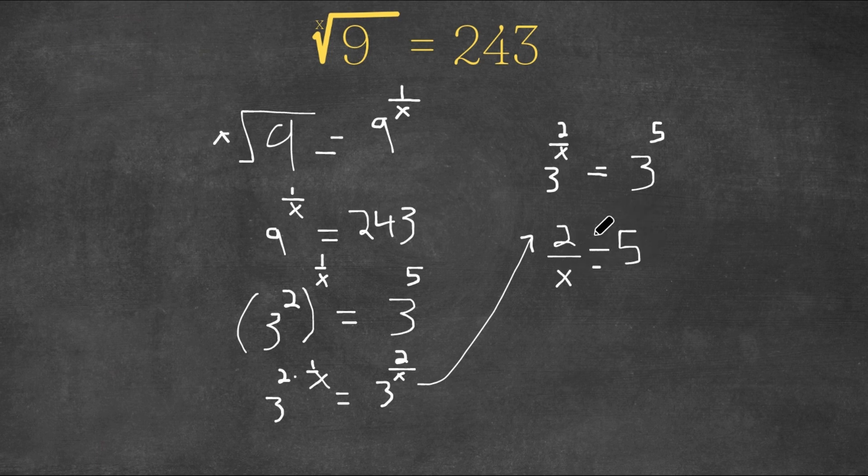And now, as you can see, we have a simple equation to solve for x. So now, let's multiply by x on both sides. And once we do that, we get 2 equals 5 times x, which is simply 5x.